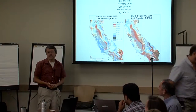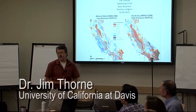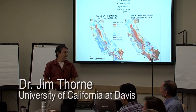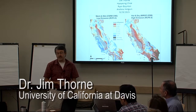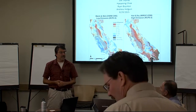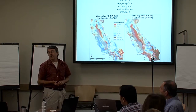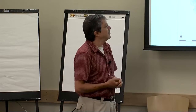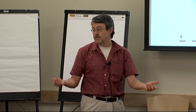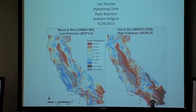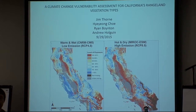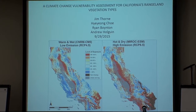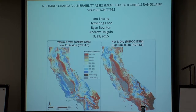Hi everybody, my name is Jim Thorne. Pelayo Alvarez and Amber Kerr asked if I would come to give a presentation, so thank you very much for this opportunity. My colleague Dr. Hye-Yong Che is over here. We both work here on the UC Davis campus in environmental science and policy, and we've been doing some work around climate vulnerability assessments for different types of vegetation. I'll present what we've recently completed, which is looking at grasslands and try to frame it within rangelands.